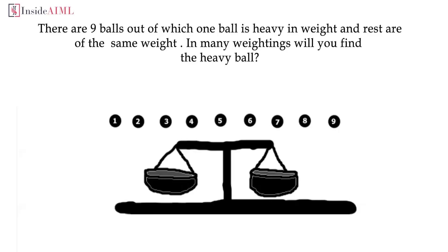Situation two: the heavy ball is among the six initial balls on the scale. The scale will tilt toward the side with the heavy ball. Take those three balls from the heavier side, remove the other three, and do the same process — place two of the three on the scale. If balanced, the ball left aside is the heaviest. If the scale tilts, that ball is the heaviest. Again, two weighings total.